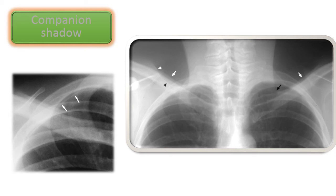The companion shadow is seen alongside the clavicles and ribs. On the left image, a parallel faint shadow of the clavicle or rib appears. This is not due to patient motion; it is simply a companion shadow — a normal X-ray phenomenon creating a double shadow or double density. We should not consider this a pathological abnormality.